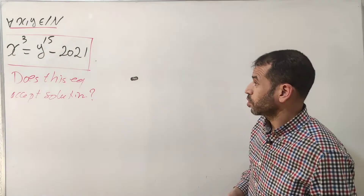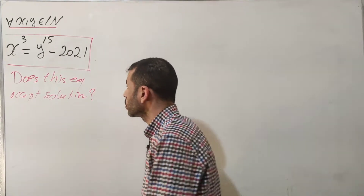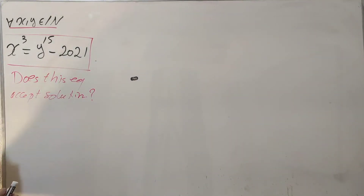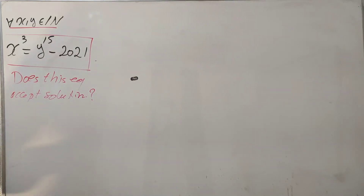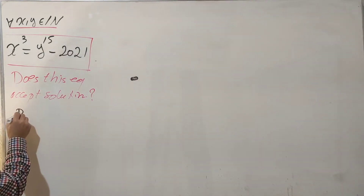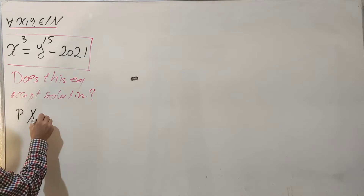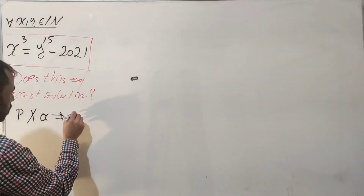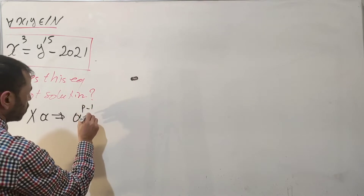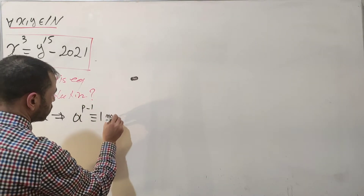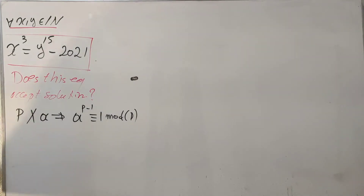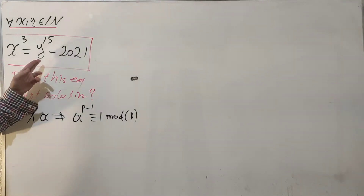We're going to use Fermat's Little Theorem, which will make this easier to solve. As you know, if p is a prime and p does not divide integer a, then by Fermat's Little Theorem, a to the p minus one is congruent to 1 mod p.